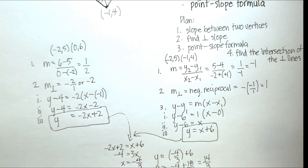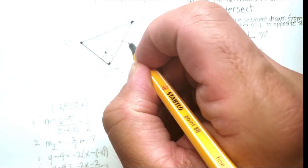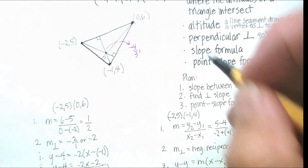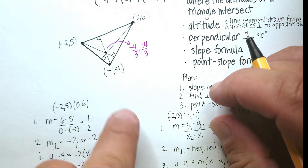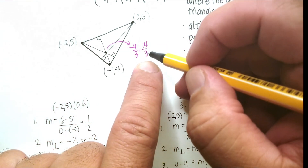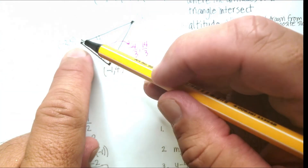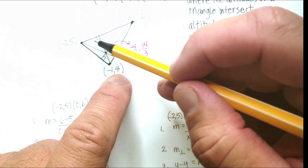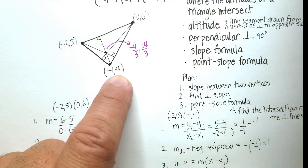The intersection — the orthocenter — is at x = −4/3 and y = 14/3. That makes sense: 14/3 is a little over 4, between 4 and 5, and looking at the graph it falls right between those y-values. Long explanation — I hope that was helpful!